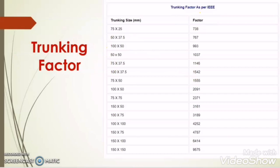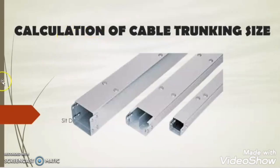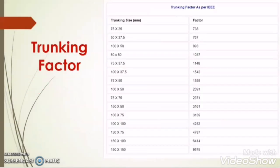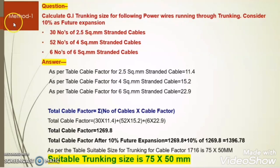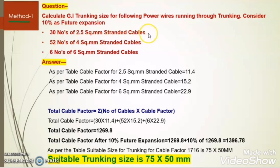In order to better understand how to calculate the trunking size, let us take an example. By referring this chart, we will find the trunking size. Calculate the GI trunking size for the following power wires running through trunking. Consider 10% as future expansion: 30 NOS of 2.5 sq mm, 52 NOS of 4 sq mm, and 6 NOS of 6 sq mm standard cable.